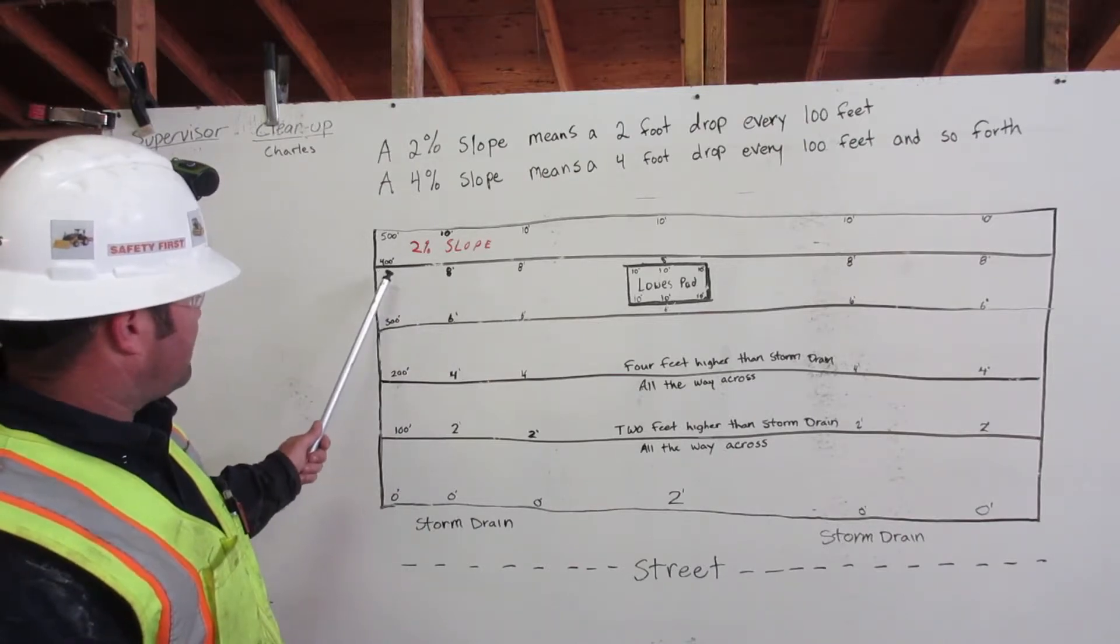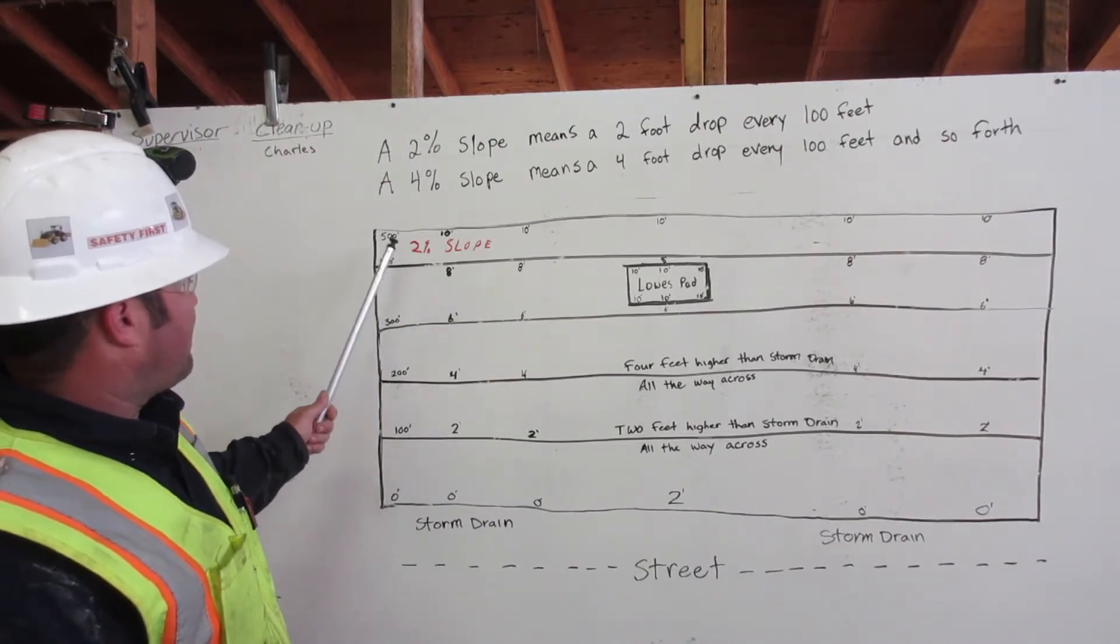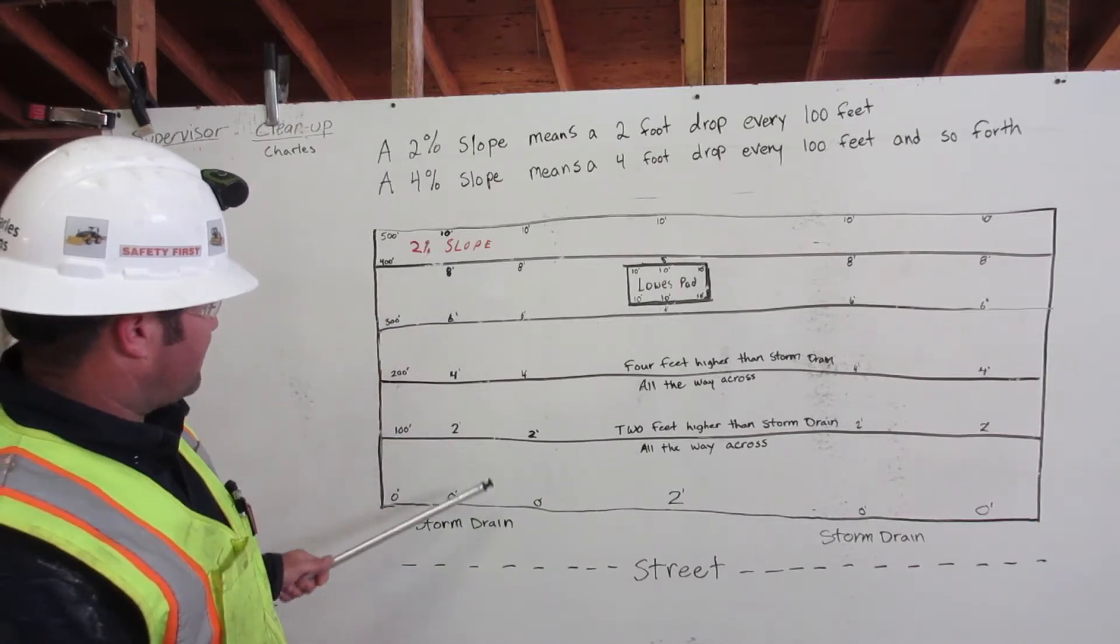At 400 feet, we will be 8 feet higher. And at 500 feet, we will be 10 feet higher than the storm drain.